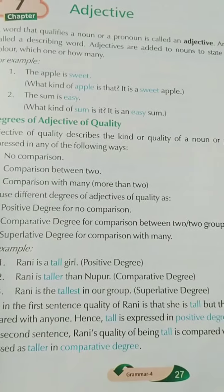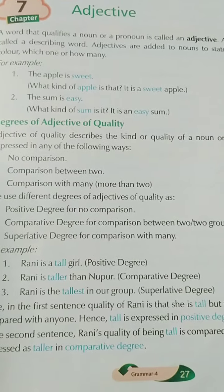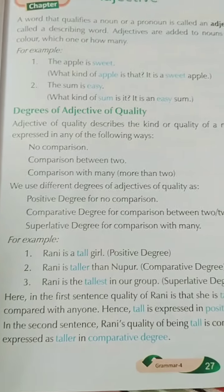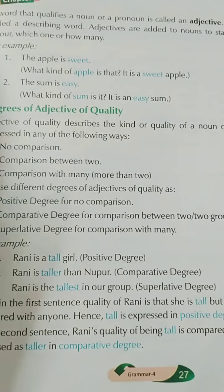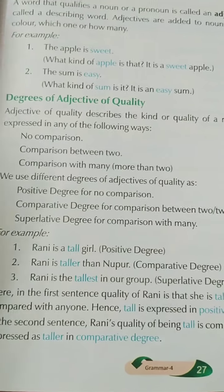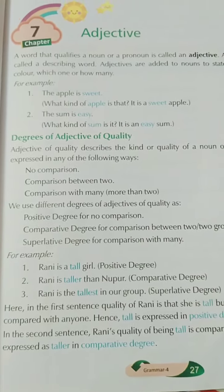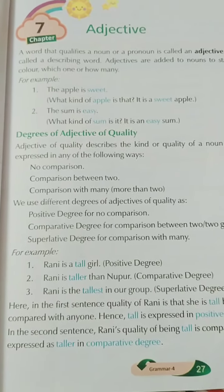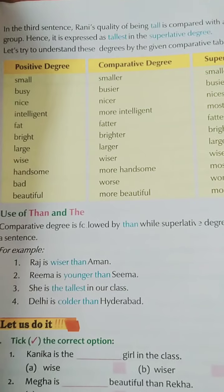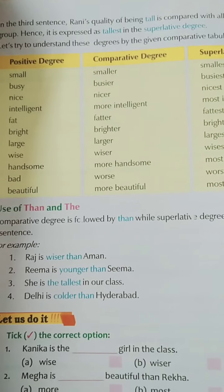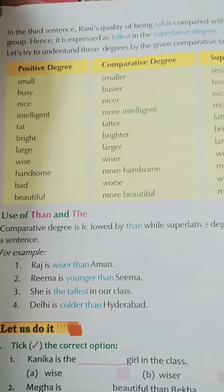In the first sentence, the quality of Rani is that she is tall, but this quality is not compared with anyone — hence 'tall' is expressed in positive degree. In the second sentence, Rani's quality of being tall is compared with Nupur, expressed as 'taller' in comparative degree. In the third sentence, Rani's quality is compared with all the members in the group — hence expressed as 'tallest' in superlative degree.